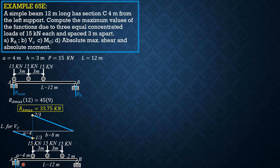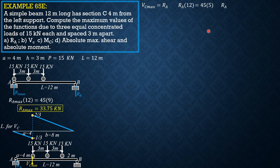Taking moments about B equals 0: RA × 12 = 45 × 5 (since 3 + 2 = 5). Maximum shear at C, just to the left of C, is simply RA — we do not need to compute Mc separately, just Vc = RA. So RA × 12 = 45 × 5, giving RA = 18.75 kilonewtons. Therefore, Vc max = 18.75 kilonewtons.